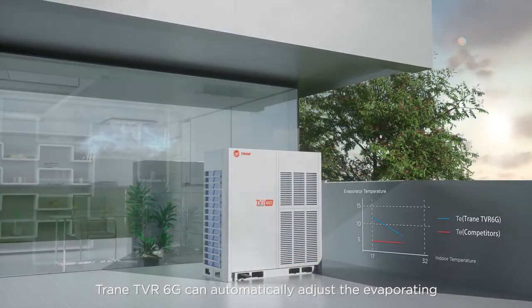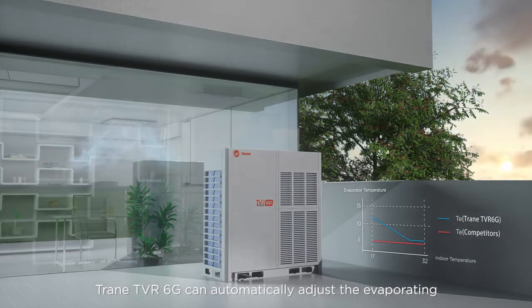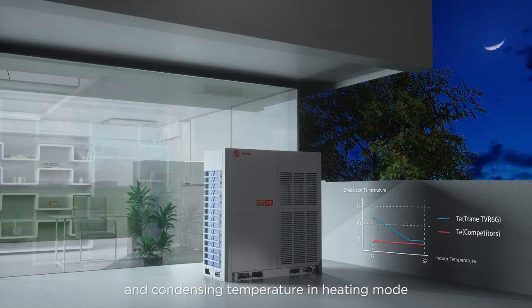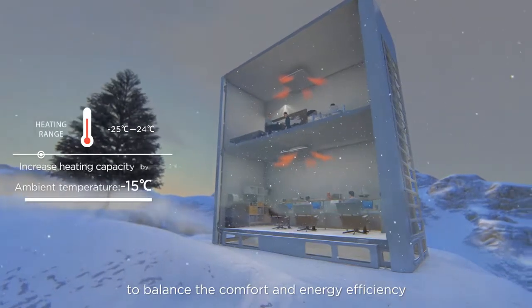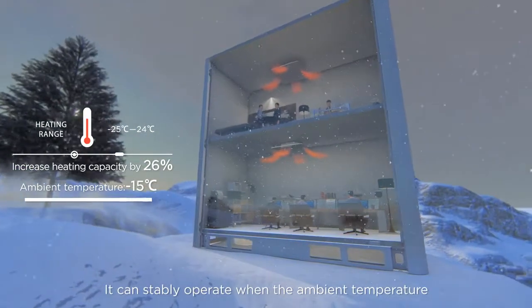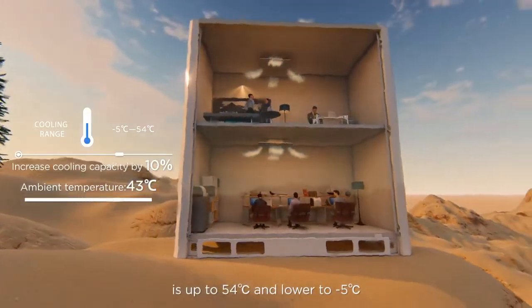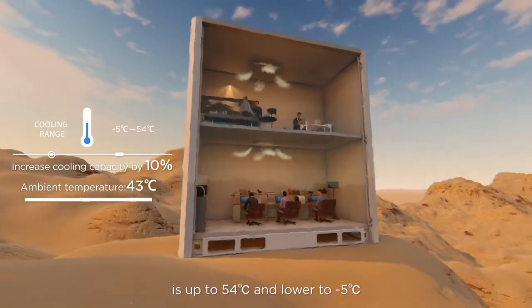TrainTVR 6G can automatically adjust the evaporating temperature in cooling mode and condensing temperature in heating mode to balance comfort and energy efficiency. It can stably operate when the ambient temperature is up to 54 degrees Celsius and lower to minus 5 degrees Celsius.